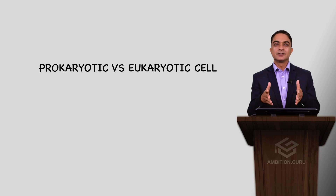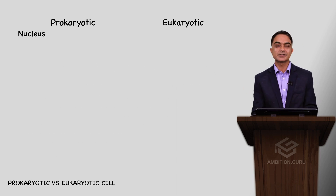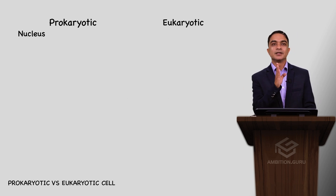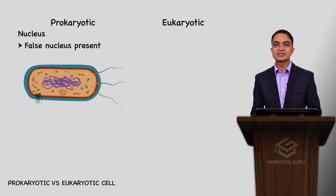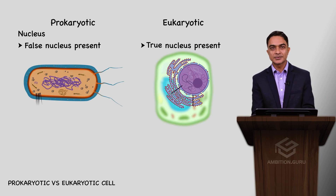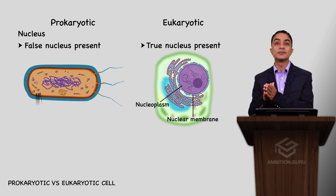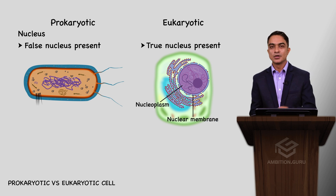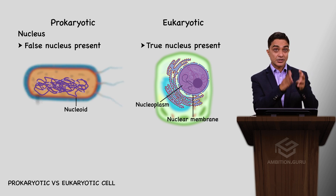Let us serially discuss. First of all, the nucleus difference: in prokaryotes, a false nucleus is present, while in eukaryotes, a true nucleus is present. True nucleus means nucleoplasm and nuclear membrane are present. A false nucleus lacks a nuclear membrane.